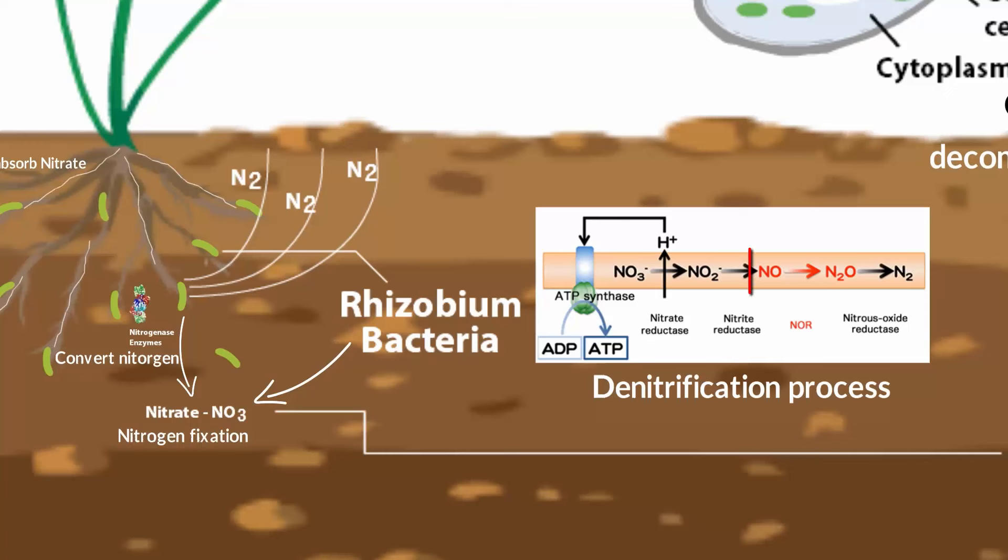As a result, gases like nitrogen oxide, nitrogen dioxide or nitrogen are formed. So, this is how nitrogen goes back into the air.